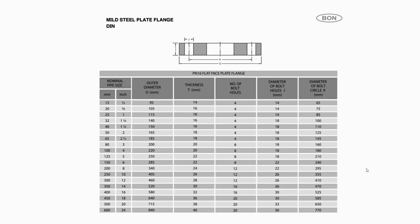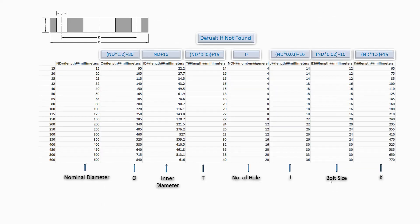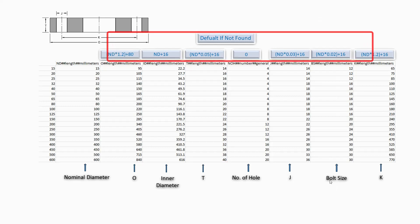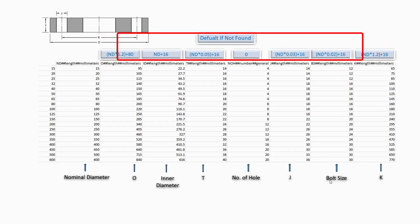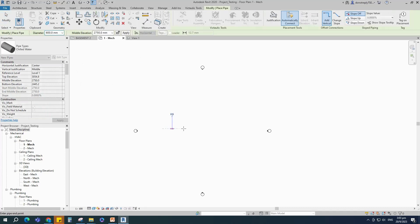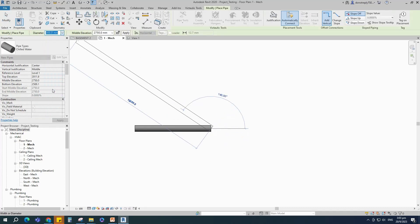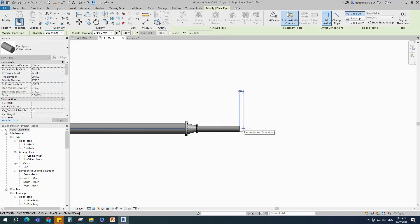I will refer this data to create a CSV file. This is the lookup table CSV file. Its data are referred from the manufacture specifications. I will use this formula for default when not found. Before creation, let's see how the family works in the project.